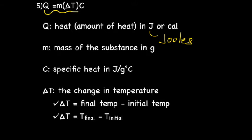C is the specific heat in joules per gram degrees Celsius, or it could also be calories per gram degrees Celsius. And delta T is the change in temperature, which you calculate by taking the final temperature minus the initial temperature. And you normally write that as T final minus T initial.